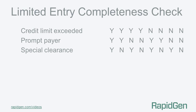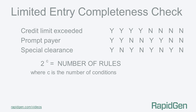In our example decision table we have just three conditions with their entry and stub. How do we know if we have defined all the logical possibilities or rules? By using the simple mathematical formula: two to the power C equals the number of rules, where C is the number of conditions. In this example we have three conditions, so two to the three will equal the number of rules.